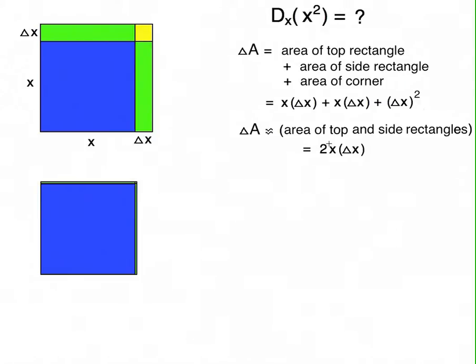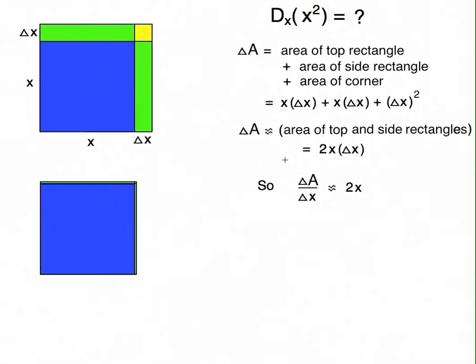Now, we mentioned the strategy before. This is the change, the actual change. We want the rate of change, delta A compared to delta x. So we divide both sides by delta x. Delta A over delta x, divide this side by delta x, we're left with 2x.